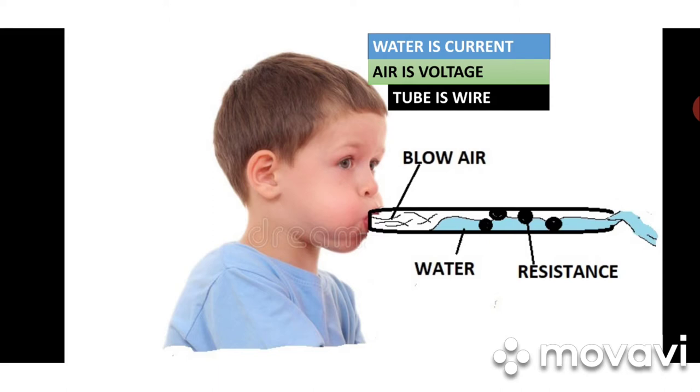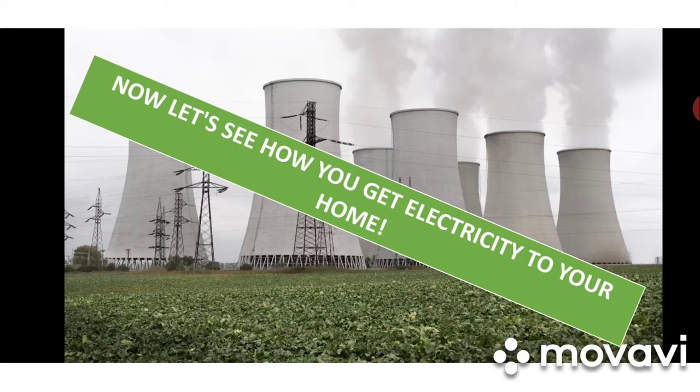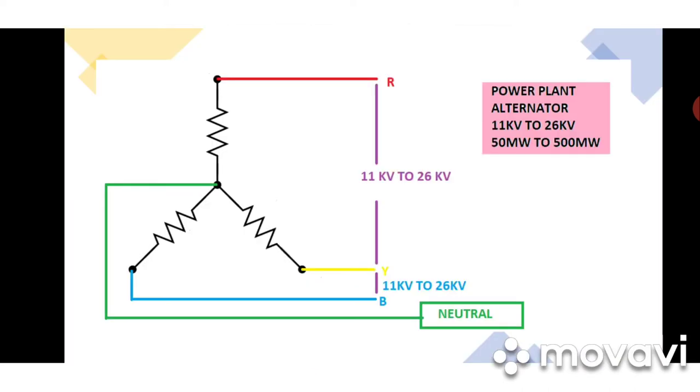Voltage is nothing but a force which pushes the current electrons. Now let's see what resistance is. In the same tube, if there is some blockage or choke, that stops the water flow. When we blow air, the water flow will be reduced. This is called resistance — it resists the electrons.